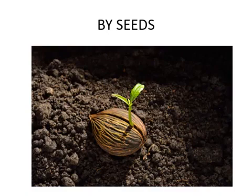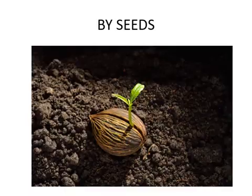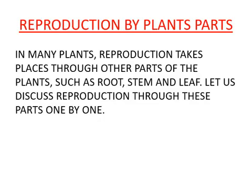Next is reproduction by seed. In many fruits and vegetables, we have seeds. If you place that seed in moist soil, a new plant will grow. In many plants, reproduction takes place through other parts of the plant, such as root, stem, and leaf.